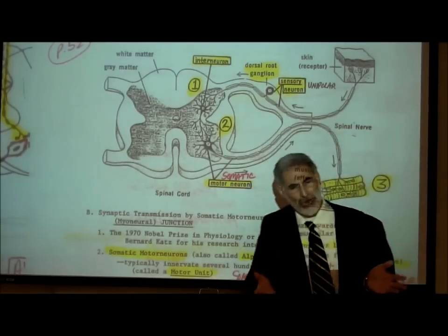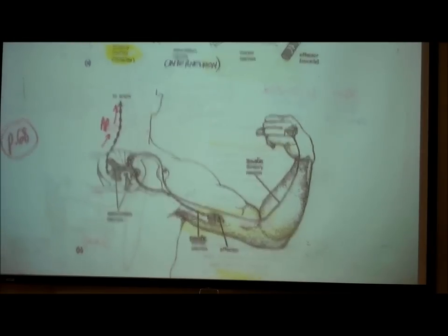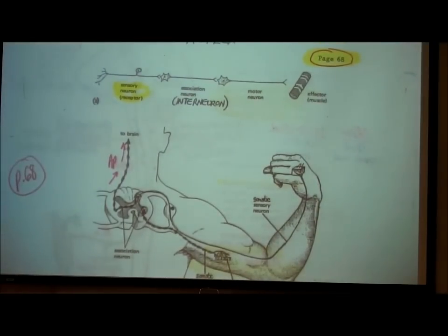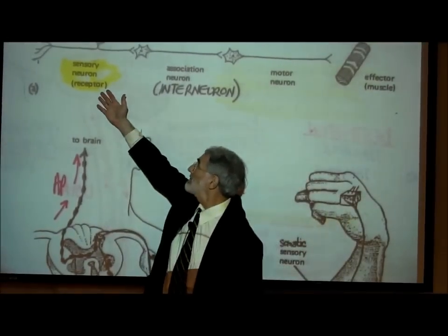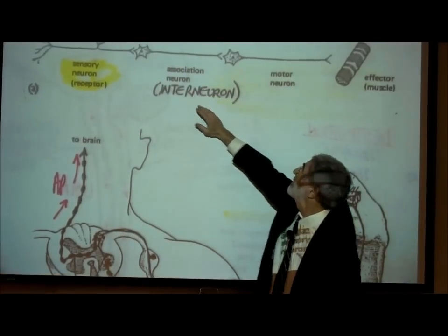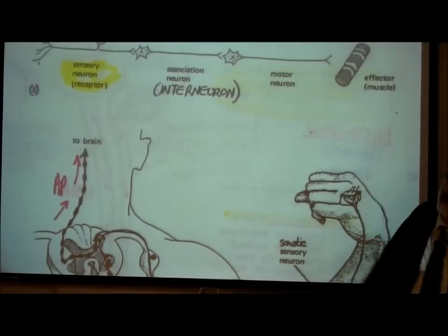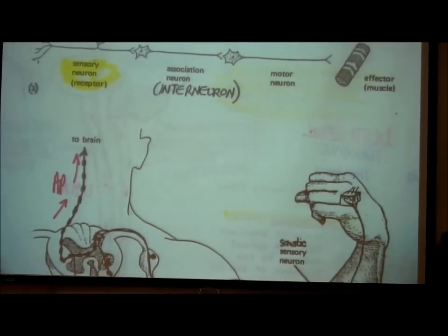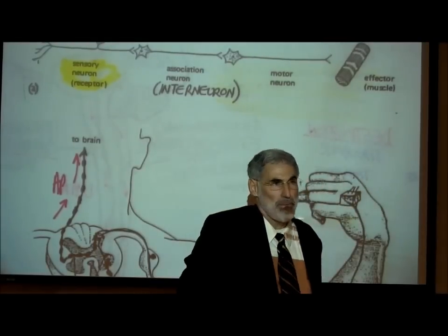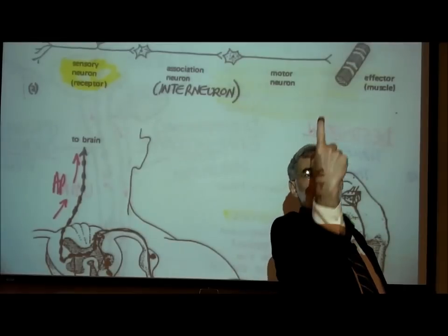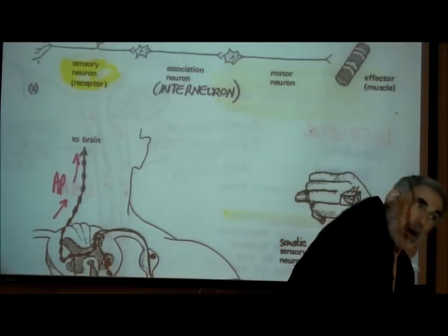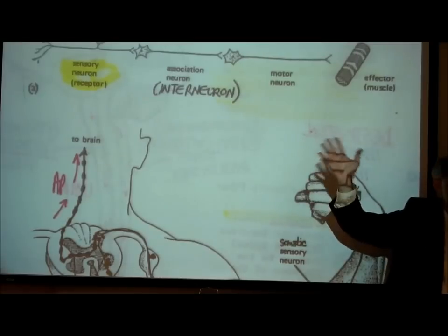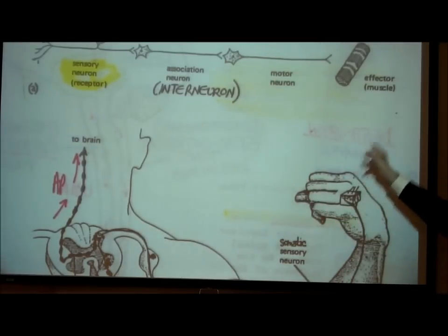What do we need for a reflex? On page 68: the components of a reflex are a sensory neuron, an interneuron, a motor neuron, and an effector. Back in section C on homeostatic reflexes, we showed sensory input going into a control center where interneurons are, and motor output going to an effector — that's the same thing drawn as a schematic box diagram.